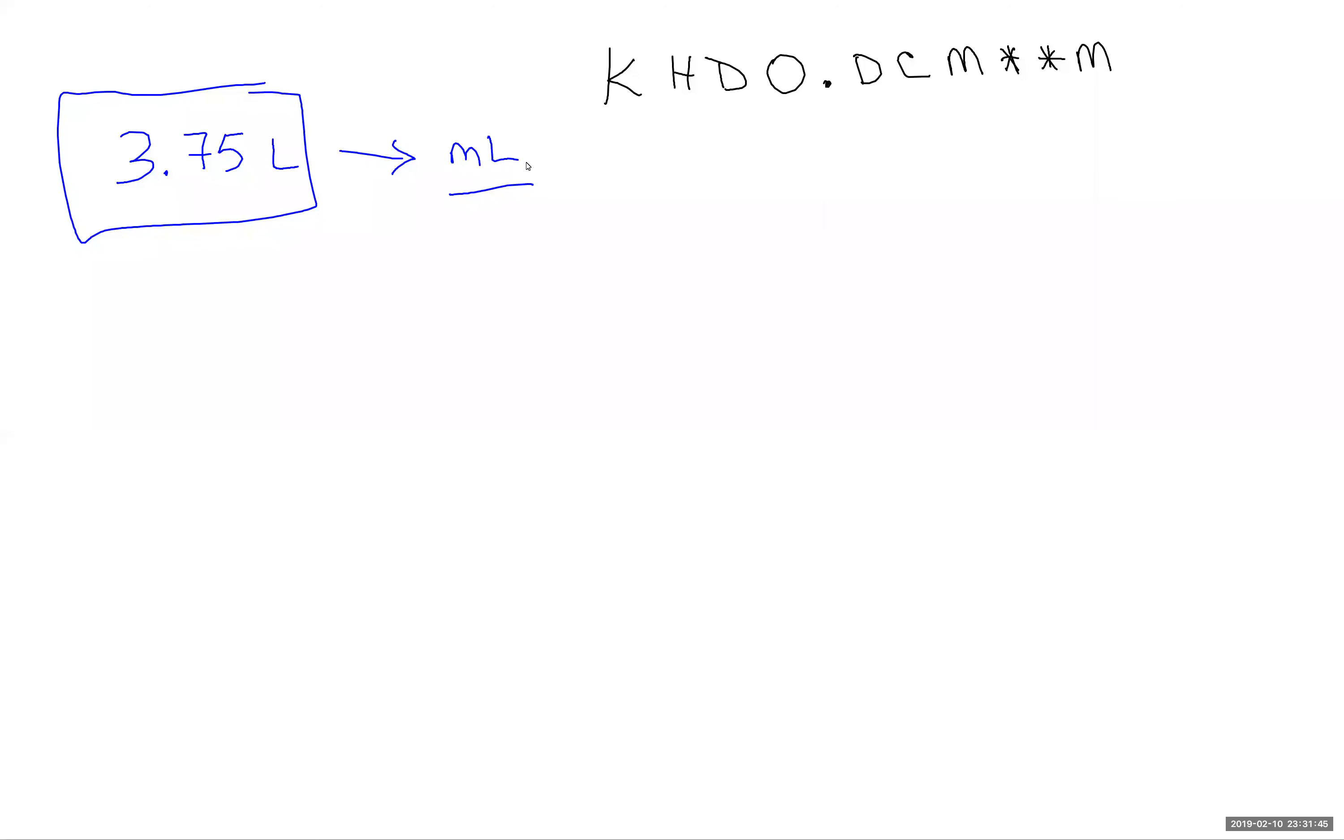When we look at the metric line, liters is here at the ones position and milliliters (milli) is right here. This is where we're starting, this is where we're ending, and we are moving to the right one, two, three places.